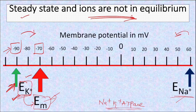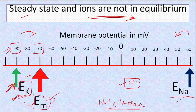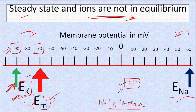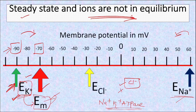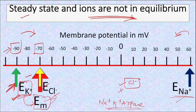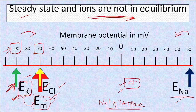For certain ions like chloride, the permeability is very high in certain cells like skeletal muscle and there is no active transport mechanism to maintain its concentration. So chloride continues to move until its equilibrium potential becomes the same as the membrane potential. Instead of influencing the membrane potential, chloride adapts to the membrane potential — its equilibrium potential becomes the same as the membrane potential.